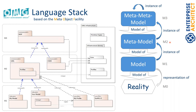The OMG's language stack is based on the Meta Object Facility (MOF), a language on level M3. MOF itself is part of the core of UML — it is a UML class diagram described in UML class diagram and used to describe the modeling language UML. We can use MOF to model other modeling languages like the Common Warehouse Metamodel (CWM) and others.